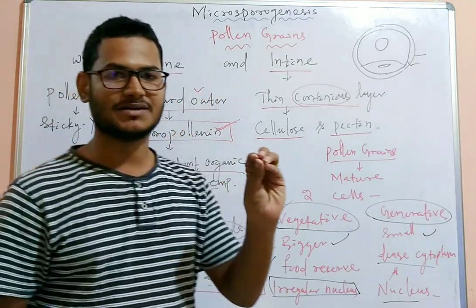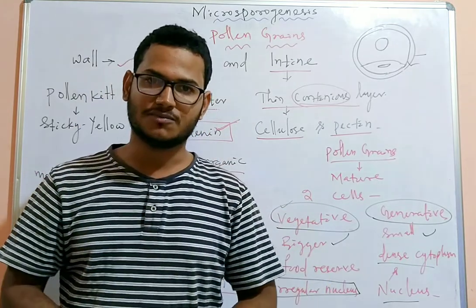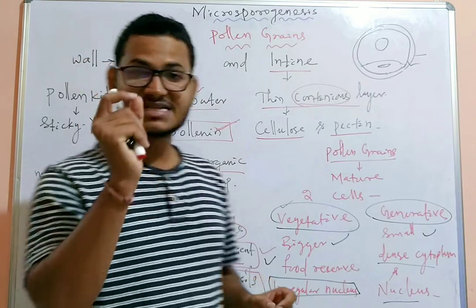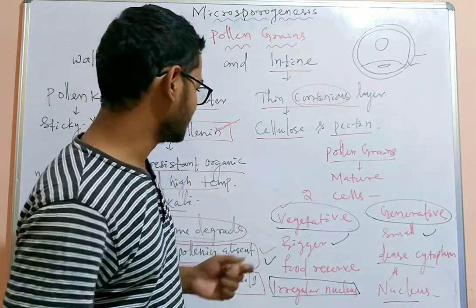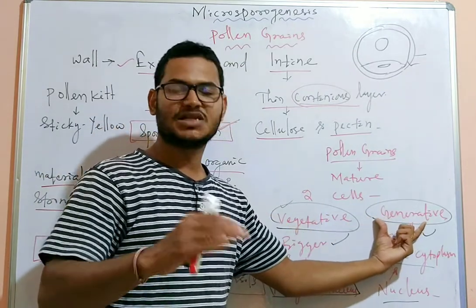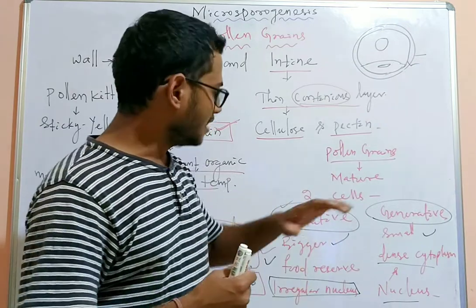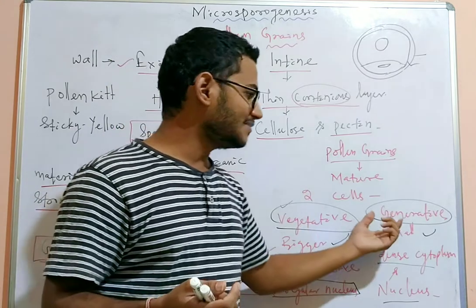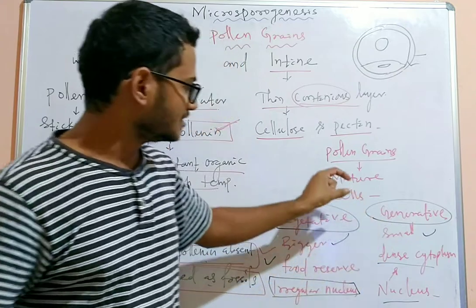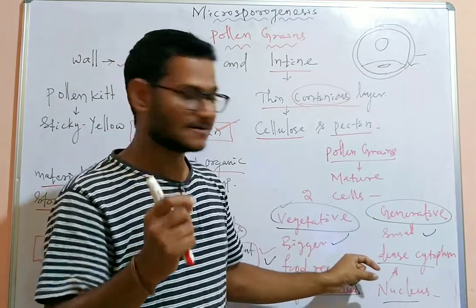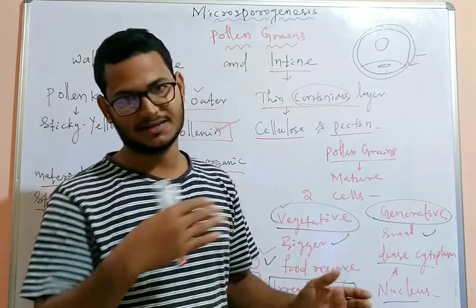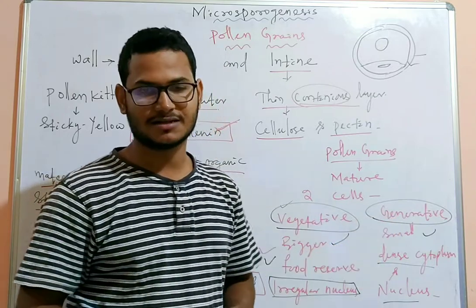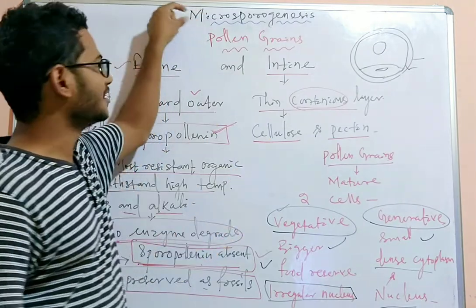In 60% of angiosperms, pollen grains shed at the two-cell stage, containing one vegetative cell and one generative cell. In the remaining 40%, the generative cell divides mitotically before shedding into two male gametes. So in those 40% of angiosperms, the pollen grain contains three cells when shed. This concludes the discussion on pollen grain structure and microsporogenesis.